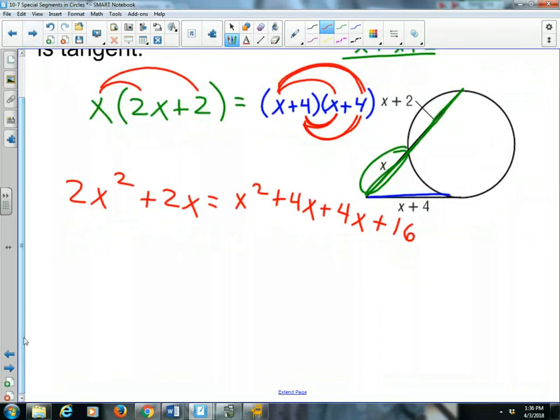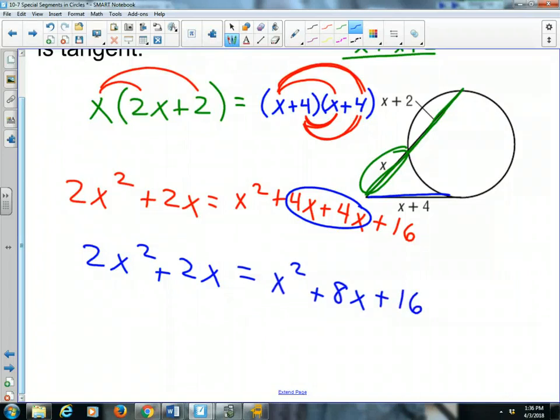Let's clean things up a little bit, shall we? Left side, everything is cleaned up as much as it can, as far as combining like terms. So, we still have 2x squared plus 2x. On the right side, this right here can make 8x. So, we would get x squared plus 8x plus 16.